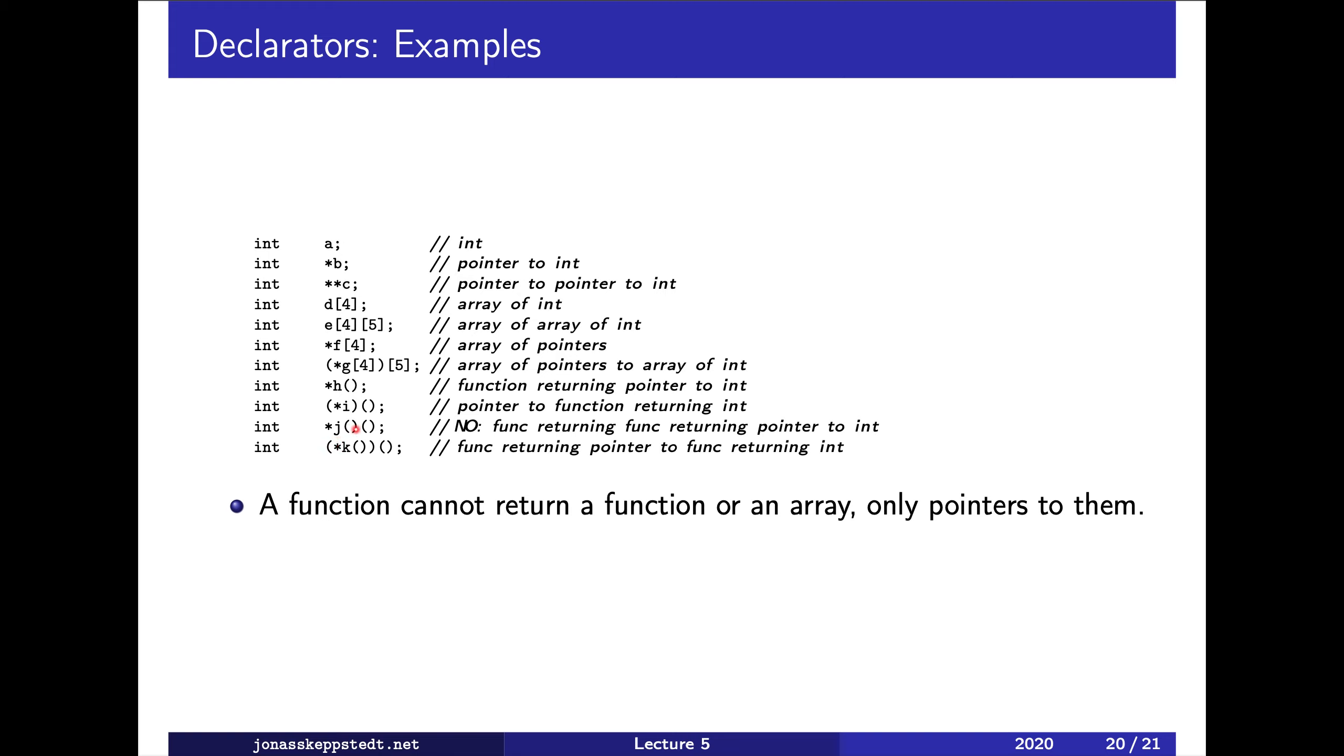Now J is a function, but it tries to return a function and that is not possible in C. So it's invalid C code. K instead, we start here. It's a function and it returns a pointer to a function which returns an int.